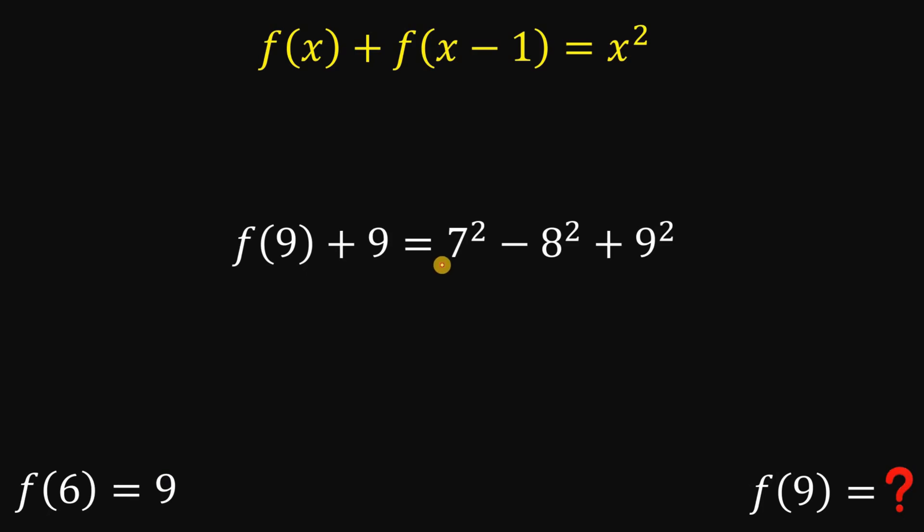Now simplify the right hand side. 7² is 49, 8² is 64, and 9² is 81.